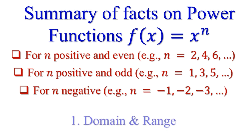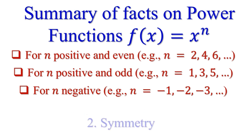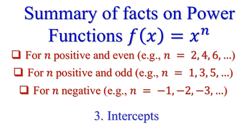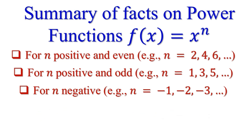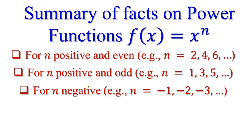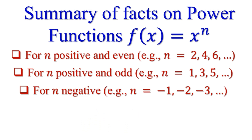For these three categories, we're going to consider the domain and the range, the symmetry, and the intercepts. Then we'll consider the behavior as x grows large from the positive and negative directions. The fifth thing we're going to consider is concavity, and thereafter the asymptotes. We'll then proceed to the assessment. Thank you very much — stay tuned.